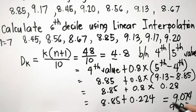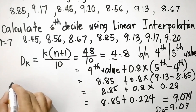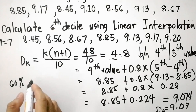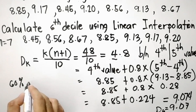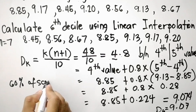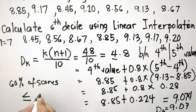Therefore D sub 6 is equal to 9.07. This means 60 percent of the data, or scores of the candidates, is less than or equal to 9.07.